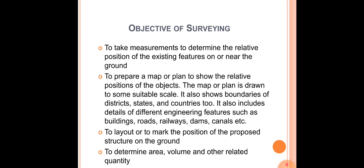The plan or map includes details of different engineering features like buildings, roads, railways, dams, canals, etc. Another objective is to lay out or mark the position of a proposed structure on the ground. Suppose there is a building or any structure — you have to mark this particular structure on the plan or a map. Again, we do a surveying for this.